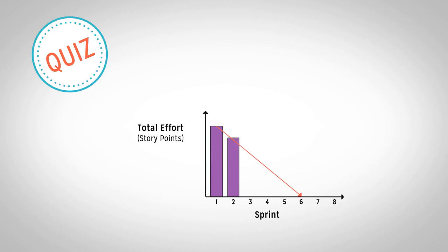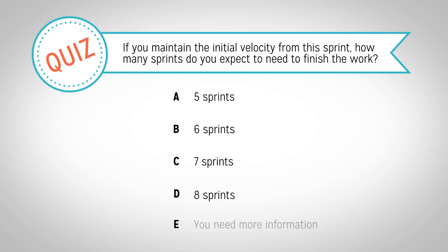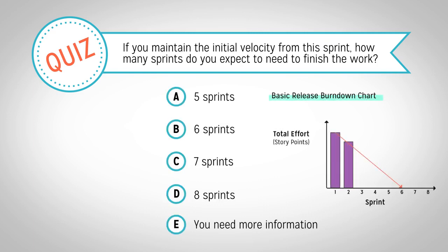Consider this release burndown chart. You have completed your first sprint. If you maintain the initial velocity from this sprint, how many sprints do you expect to need to finish the work? A: 5 sprints. B: 6 sprints. C: 7 sprints. D: 8 sprints. Or E: you need more information. If you maintain this velocity, your prediction line indicates that you will have no story points to complete at the beginning of sprint 6, meaning you will have completed the project in 5 sprints. Therefore, A is the correct answer.